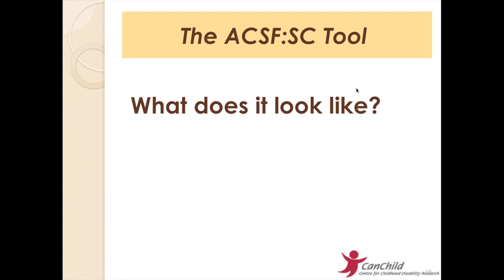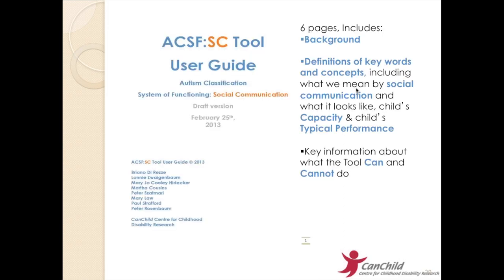So what does it look like? Along with the tool is a user guide that we've thought really long and hard about and revised. It gives people who are going to use the tool a background about where we're coming from and how to use the tool. The user guide is six pages and includes a background explaining what we mean by social communication, definitions and keywords, concepts including what social communication looks like, what a child's social communication capacity and typical performance looks like, and also key information about what the tool can and cannot do — so people understand that again, it's not a test.